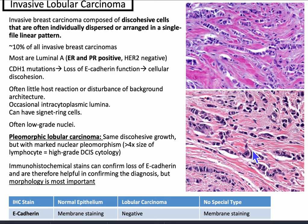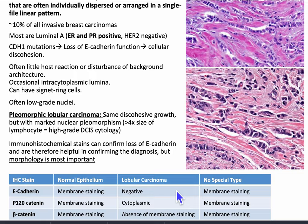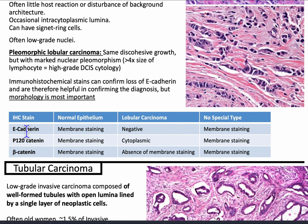Within invasive lobular carcinoma, you can have pleomorphic lobular carcinoma — the same discohesive growth but with marked nuclear pleomorphism, nuclei greater than four times the size of a lymphocyte, equivalent to high-grade DCIS cytology. IHC can confirm loss of E-cadherin and is helpful in confirming diagnosis, but morphology is more important than IHC. IHC stains include E-cadherin, P120-catenin, and beta-catenin. Normal epithelium shows membranous staining; lobular carcinoma shows negative E-cadherin, cytoplasmic P120-catenin, and absent beta-catenin membrane staining. NST invasive breast carcinoma shows membrane staining for all three.